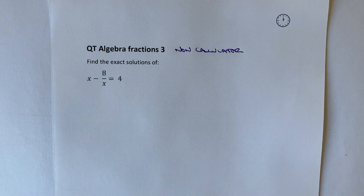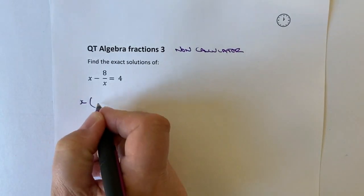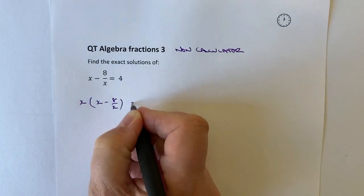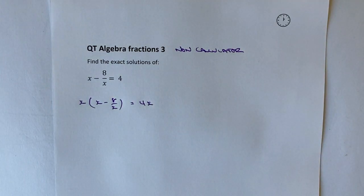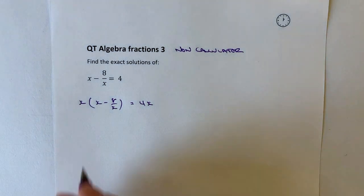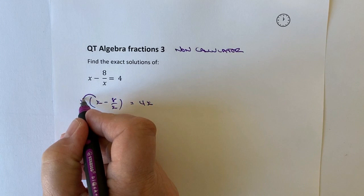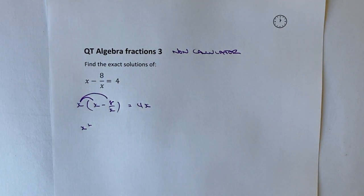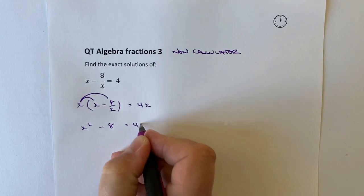So what I'm going to do is I'm going to multiply both sides by x. Because if I do that, I'm going to get x times x minus 8 over x equals 4 times x is going to be 4x. And when I get rid of these brackets, I'm going to have x times x, which is x squared, and then x times minus 8 over x. Well, what happens there is that effectively the two x's cancel themselves out. I'm just going to end up with minus 8 equals 4x.